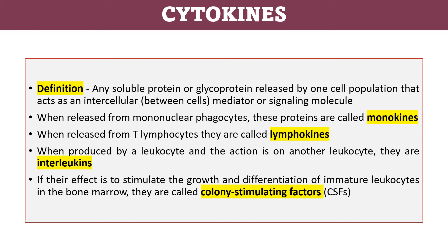When released from mononuclear phagocytes, these proteins are called monokines. If they are released from T lymphocytes, they are called lymphokines. When produced by a leukocyte and the action is on another leukocyte, they are interleukins. If their effect is to stimulate the growth and differentiation of immature leukocytes in bone marrow, they are called colony-stimulating factors.